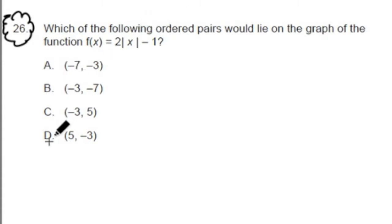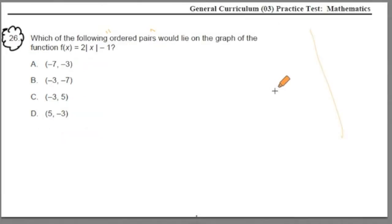Then we have these answer choices here. Now you notice it does use a lot of math vocabulary, like ordered pairs. Whenever we think of an ordered pair, these are the coordinates that are found on a coordinate plane, like a graph. An x on the horizontal axis, y is on the vertical axis.